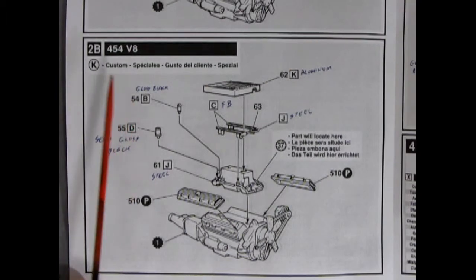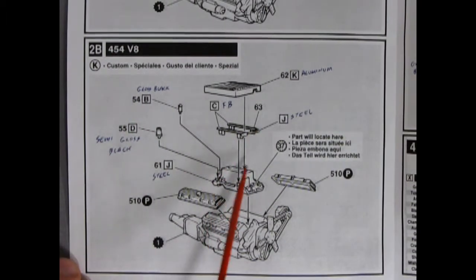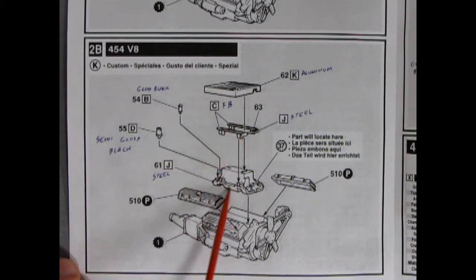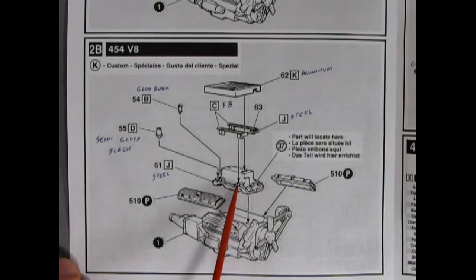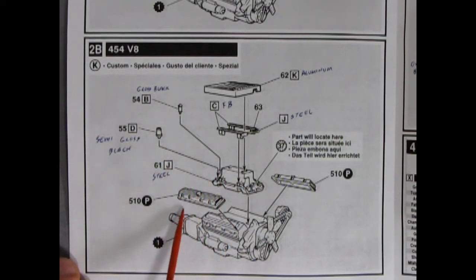Next up we have the custom 454 V8. And I do believe this is fuel injection. And that is our cover for fuel injection plus the hoses. There's our intake manifold, the big tall sky riser. And then we've got our distributor and the coil going together. And here are plated valve covers.